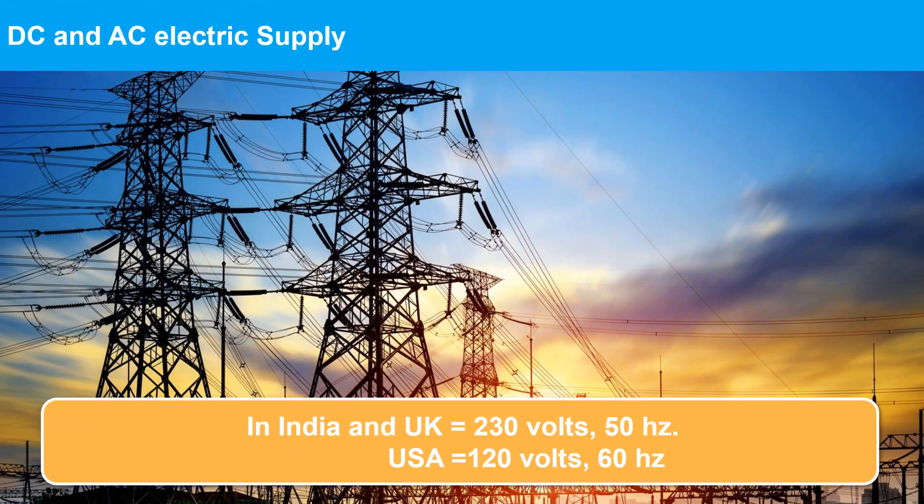The mains electricity supply varies in different countries around the world in terms of both voltage and frequency. For example, in India and UK it is 230 volts at 50 Hertz, while in the USA it is 120 volts at 60 Hertz.